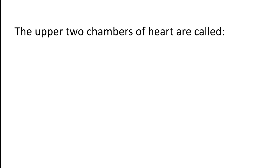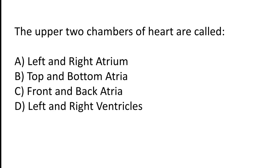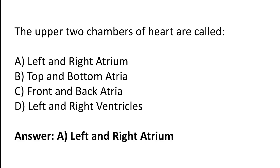The upper two chambers of the heart are called: Left and right atrium, top and bottom atria, front and back atria, or left and right ventricles. The correct answer is option A. The upper two chambers of the heart are called left and right atrium.